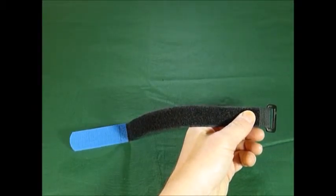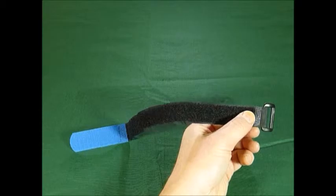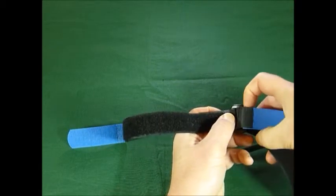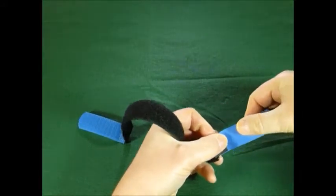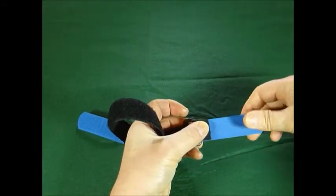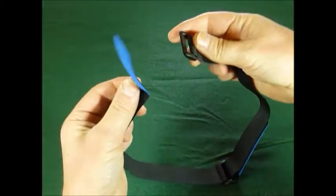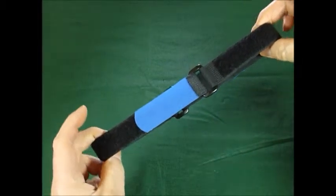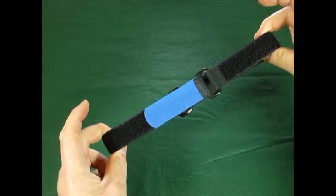If you find that these straps are too short, you can of course join them together. Simply insert the end of one strap into the ring, fold back to secure, then you can double it through, fold back to secure, and the result is one long strong strap.